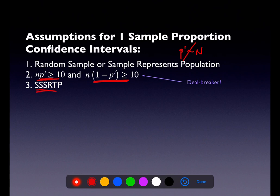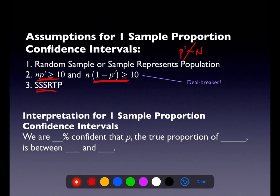We also want our sample size to be small relative to our population so we can sample without replacement. True sampling should be done with replacement, but in the real world we usually do it without. As long as our sample size is less than 10% of the population, we're good. The interpretation is: we are blank percent confident that p, the true proportion of whatever the context is, is between the lower bound and the upper bound of the confidence interval.